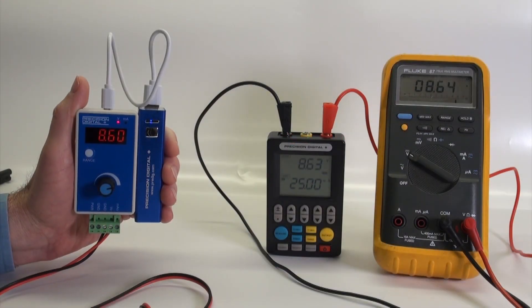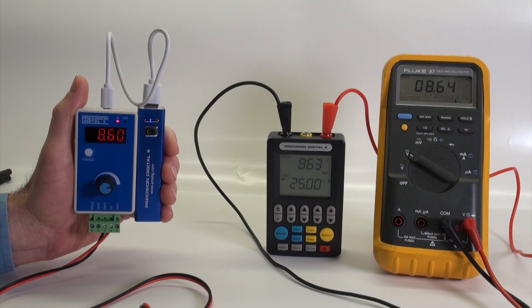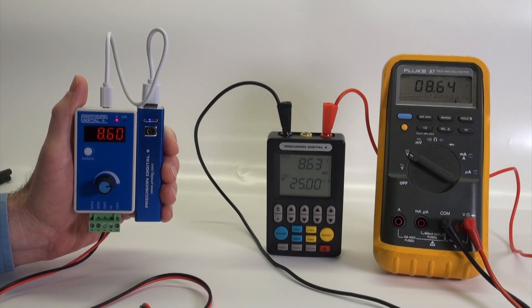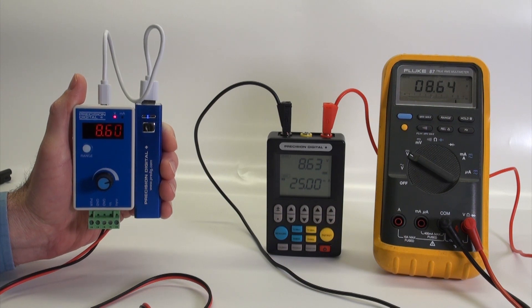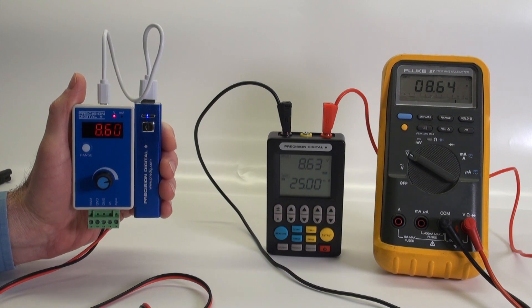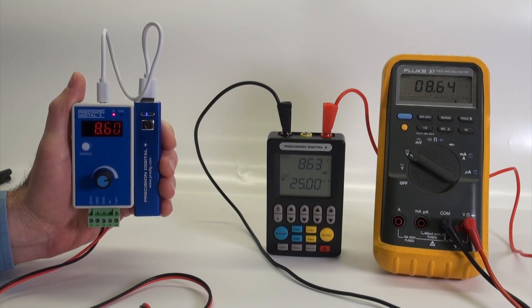I'm holding Precision Digital's new PD9502 milliamp and voltage signal generator. The PD9502 can be powered either from 24 volts DC, or as you see in this case, we're powering it right off of that optional USB power pack.